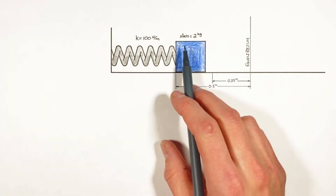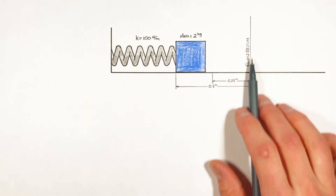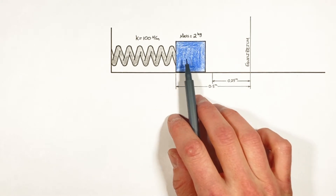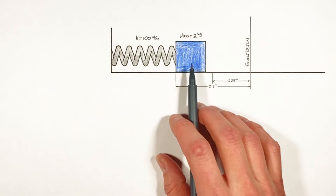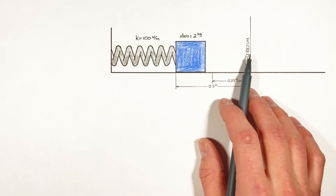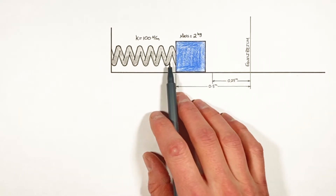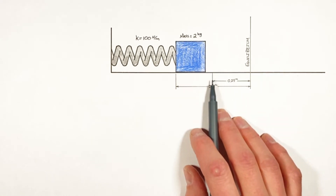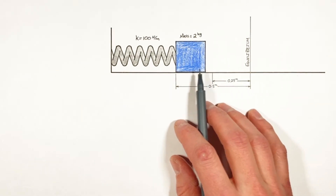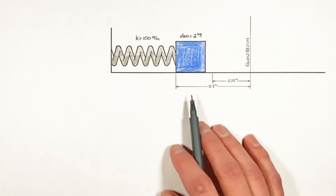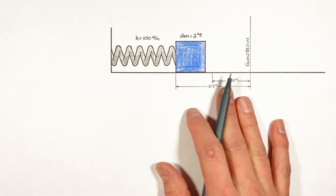Today we have a block attached to a spring that has been compressed some distance from equilibrium. We're going to let this block go and it's going to oscillate back and forth on a frictionless surface. We're going to solve for the maximum velocity of this block as it's pushed forward by the spring, and also for the velocity once the spring has relaxed to a point 0.25 meters from equilibrium. I'll do as much as possible in variables to make this useful for different problems.